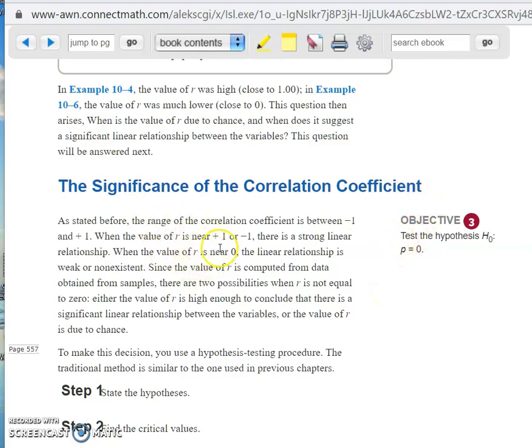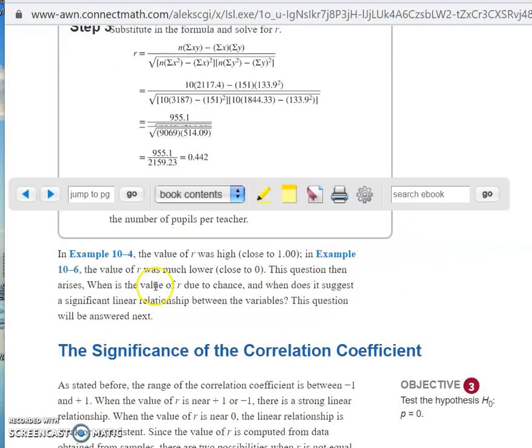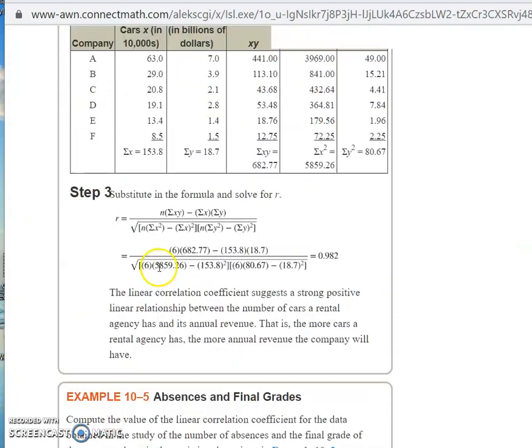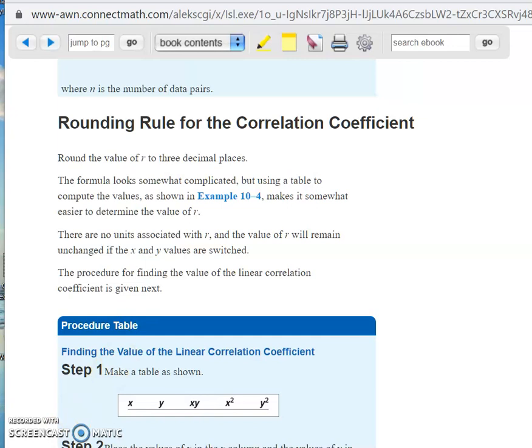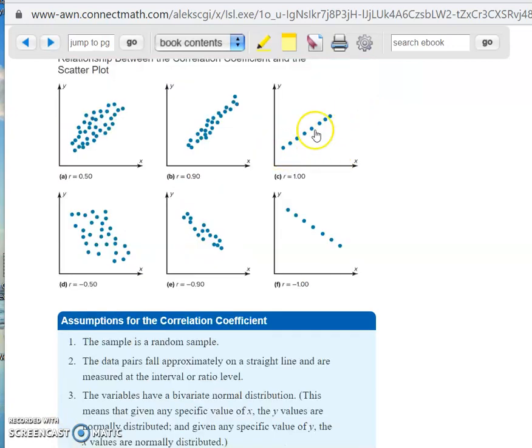As he mentions right here, the correlation coefficient is always going to be, by definition, between negative 1 and positive 1. If it's near positive 1 or near negative 1, there is a strong linear relationship. If it's exactly 1, then it's an exact relationship. It would look something like this - it would be a straight line.